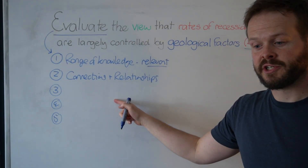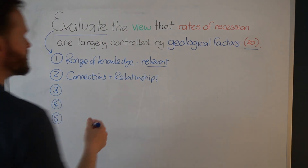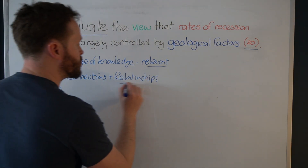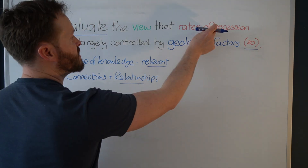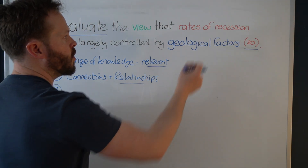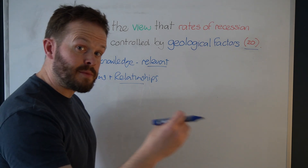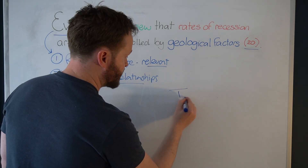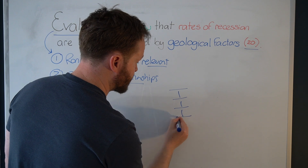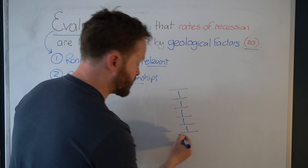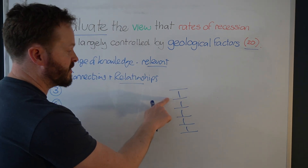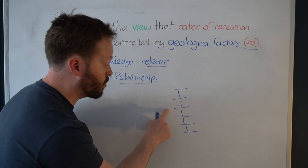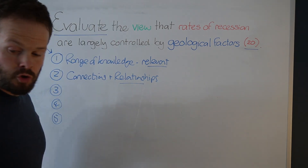Connections and relationships — what are they? Connections and relationships are how you show development in your paragraphs. You've got to show some relationships between rates of recession and geological factors. What's the relationship here? So what the examiner's looking for you to do is say: because of this factor, it leads to this, which leads to this, which leads to this, which leads to recession. Level one students will develop that much. Level two will go further. Level three further still, and level four will go all the way.